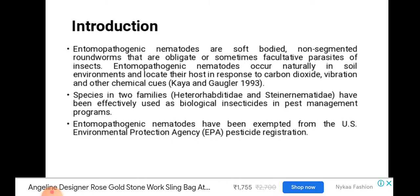What is a nematode? Nematodes are soft-bodied, non-segmented roundworms that are obligate or sometimes facultative parasites of insects. Entomopathogenic nematodes occur naturally in the soil environment and locate their host in response to carbon dioxide, vibration, and other chemical cues. Species in two families have been effectively used as biological insecticides.